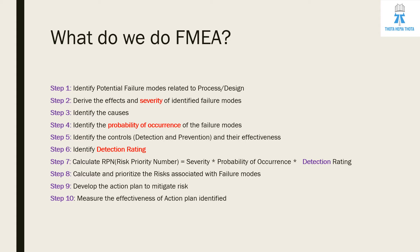Step three is to identify the causes — what caused this failure. Step four is to identify the probability of occurrence of the failure mode. Step five is to identify the controls, which include both detection and prevention controls, and their effectiveness.